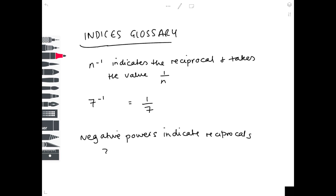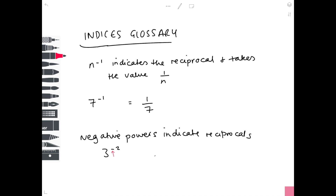For example, 3 to the minus 2: the negative sign means we take the reciprocal, giving us 1/3 as our base. The 2 indicates we need to square the denominator — 3 squared is 9 — so the answer is 1/9.